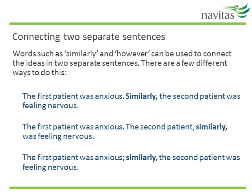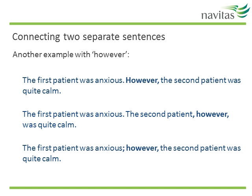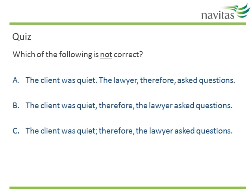You may also want to show a relationship between two separate sentences — in other words, not join them into one sentence, but have them flow logically. Words such as 'similarly' and 'however' can be used to connect ideas in two separate sentences. Take a look at the examples on the slide. This third option is a little less common, so if you're not confident using it, stick with the first two. Here's another example with 'however'. Sentence B is not correct because the two sentences should be separated by a full stop or a semicolon, not just a comma.